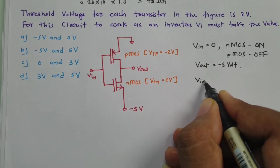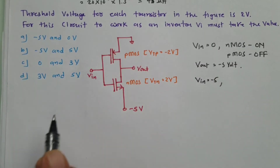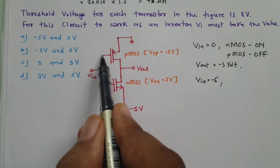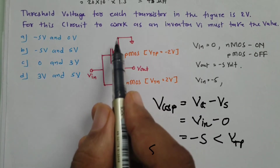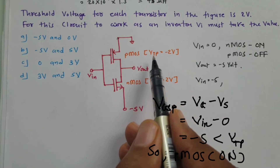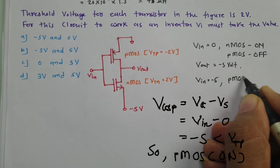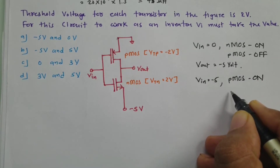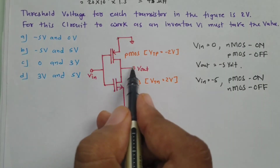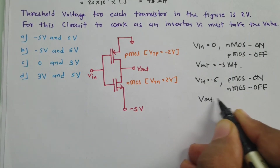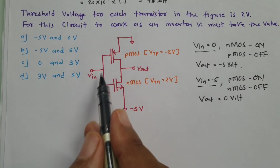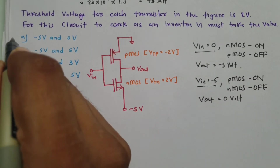If VIN = −5 V, then VGSP = VIN − 0 = −5 V. Since −5 is lower than VTP (= −2), PMOS turns on. NMOS turns off. With PMOS on and connected to ground, VOUT = 0 V. So when VIN is 0, VOUT is −5 V, and when VIN is −5 V, VOUT is 0 V — the circuit functions as an inverter. The correct answer is −5 to 0 V.